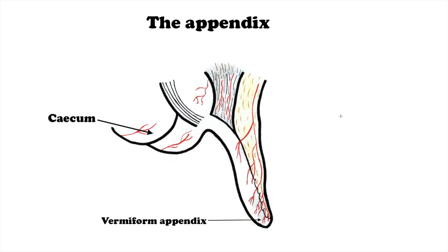Hi everyone, it's SchematicMet and today we are going to talk about the appendix anatomy. The appendix, or vermiform appendix, is a finger-like blind-ended tube connected to the cecum. The cecum is a pouch-like structure of the colon located at the junction of the small and the large intestines.